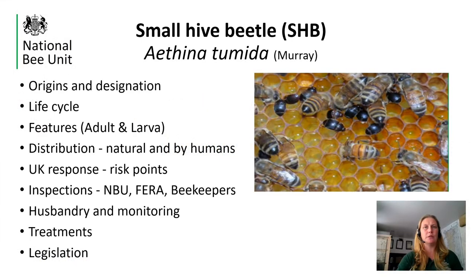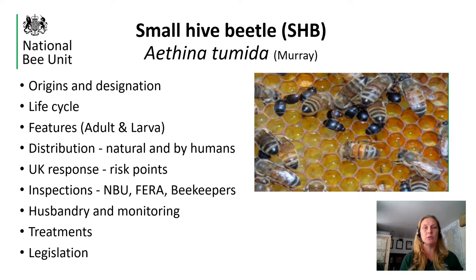Hello and welcome to this National Bee Unit presentation on Small Hive Beetle, Athena timidia. In this presentation you will find out about Small Hive Beetle's origins and designation, their life cycle and the anatomical features of the adults and the larvae. I will tell you about their distribution and how they have spread naturally and with the assistance of humans, how the UK responds to the threat of Small Hive Beetle, what the National Bee Unit and our laboratory at FERRA does when we carry out exotic pest inspections, what you as a beekeeper can do to help monitor for Small Hive Beetle, the treatments that are available, and finally the legislation we work to and why this is important.